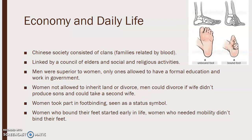Chinese society consisted of different clans — blood-related families linked by a council of elders and social and religious activities. Men were superior to women; only men were allowed to have a formal education and work in government. Women were not allowed to inherit land or divorce, but men could divorce if the wife didn't produce sons, and they could take a second wife. Women took part in what's called foot binding, which was seen as a status symbol. Women who bound their feet started very early in their life, though women who needed mobility decided not to because it's very painful and makes it hard to get around.